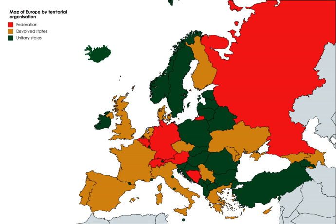On 1 January 1901 the nation-state of Australia officially came into existence as a federation. The Australian continent was colonized by the United Kingdom in 1788, which subsequently established six eventually self-governing colonies there. In the 1890s the governments of these colonies all held referendums on becoming the unified, self-governing Commonwealth of Australia within the British Empire. When all the colonies voted in favour of federation, the Federation of Australia commenced, resulting in the establishment of the Commonwealth of Australia in 1901.